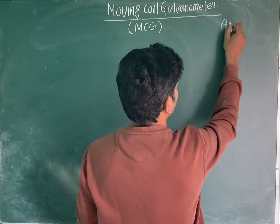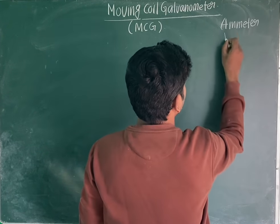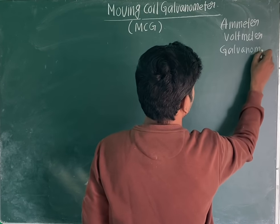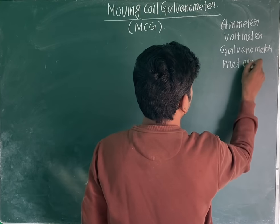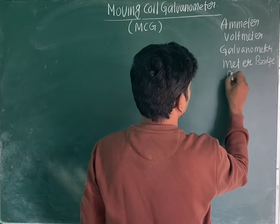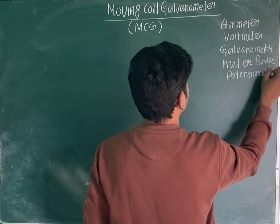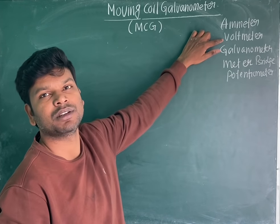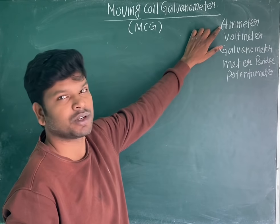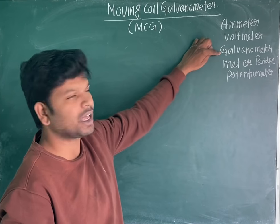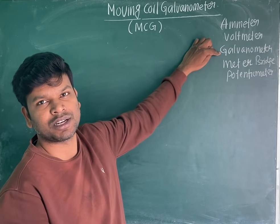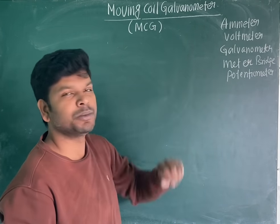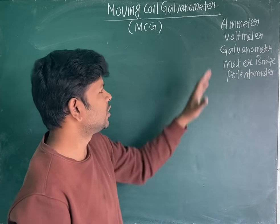In electricity and magnetism we study several measuring devices: ammeter, voltmeter, galvanometer, meter bridge, and potentiometer. Ammeter is used to measure current and is connected in series. Voltmeter is used to measure potential difference and is connected in parallel. Galvanometer is used to measure very small values of current and potential difference and its direction. Meter bridge is used to measure the unknown resistance of any wire or conductor. Potentiometer is used to measure the EMF of a cell.